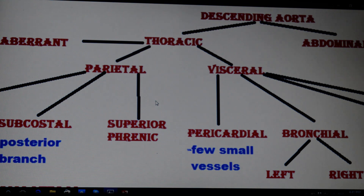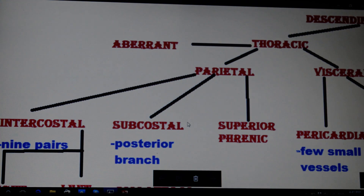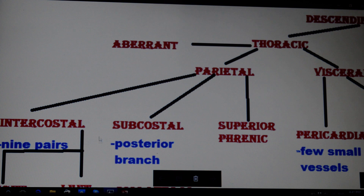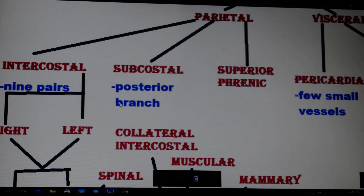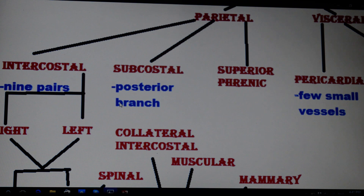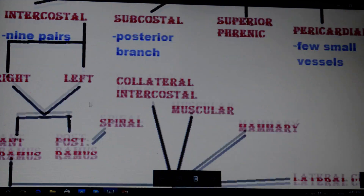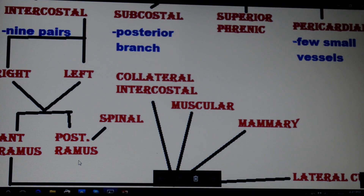Parietal branches are the outer superficial branches, while visceral are the deep branches. Starting with the parietal arteries, parietal has three parts: intercostal, subcostal, and the superior phrenic. The intercostals are basically nine pairs of arteries divided into the right intercostal arteries and the left intercostal arteries.